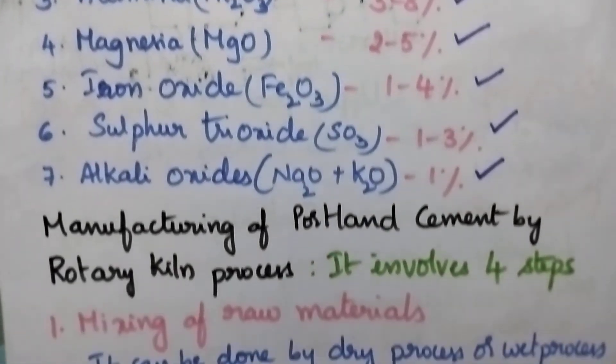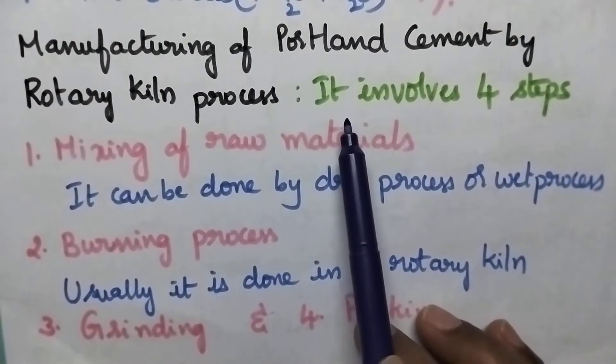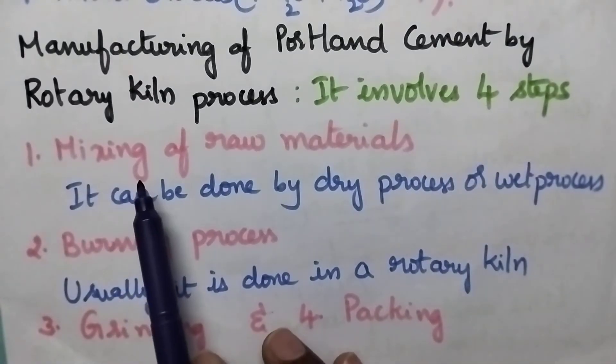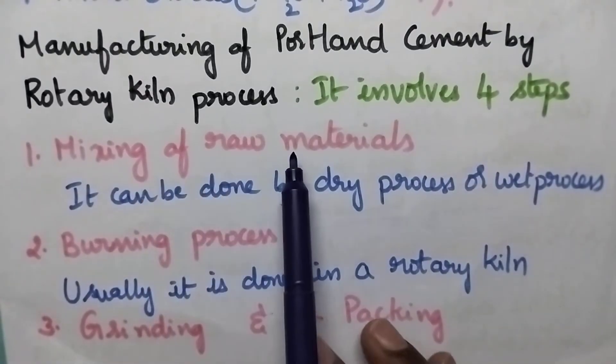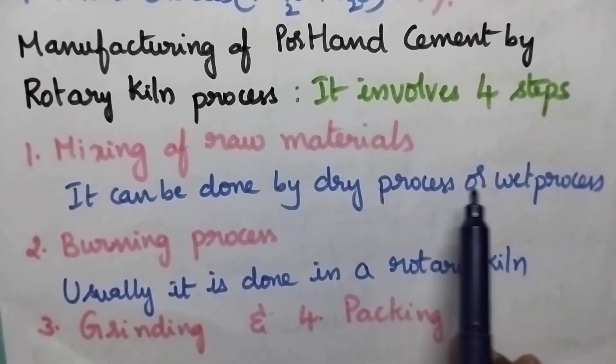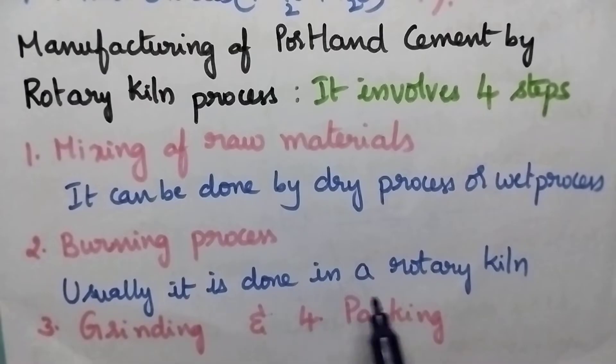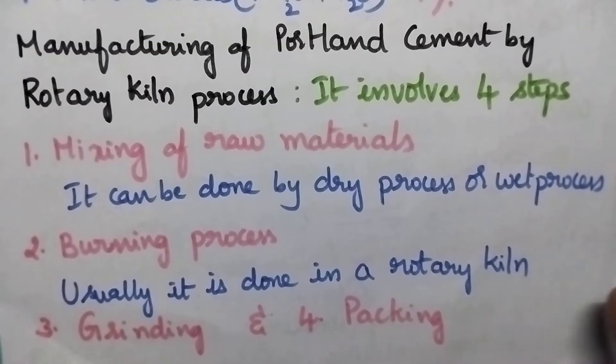The manufacturing of Portland cement by Rotary Kiln Process involves four major steps. First step is mixing of the raw materials, which can be done by dry process or wet process. The second step involves burning of the raw material, usually done in the Rotary Kiln. Third process is grinding, followed by packing.